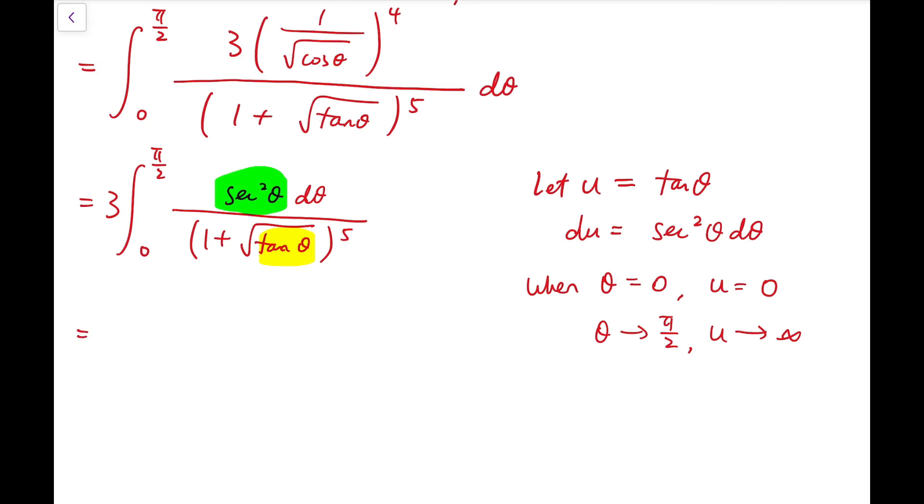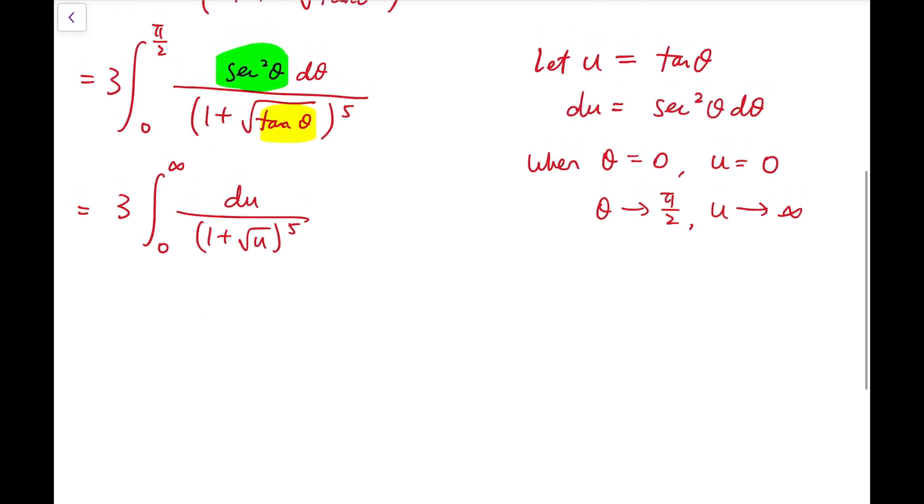So that integral becomes 3 times the integral of du divided by (1 + √u)^5, from u equals 0 to infinity. Although the upper limit is a bit more complicated, the integrand itself is very easy. Next, I'm going to further make a second substitution to group this as one whole term, which means I'm going to let 1 + √u equal v.